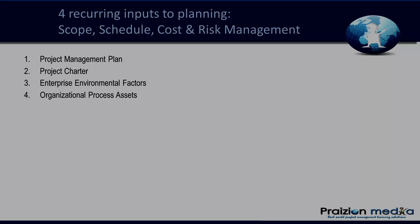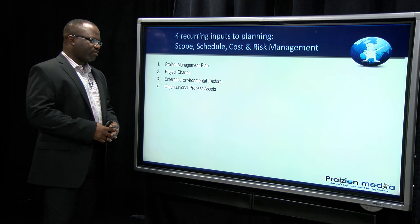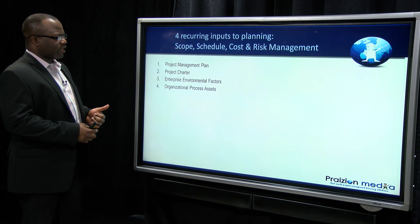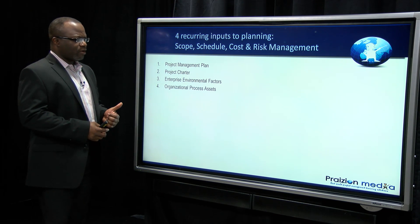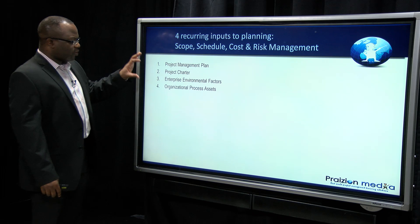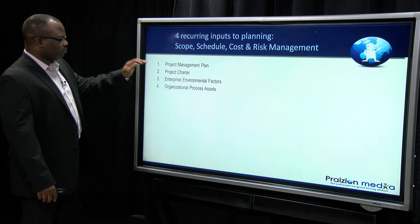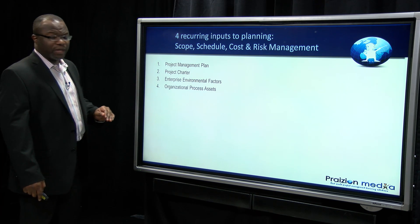Let's talk about four recurring inputs to planning processes, specifically those planning processes in scope, schedule, cost, and risk. In plan scope management, plan schedule management, plan cost management, and plan risk management, we've got four recurring themes — four recurring inputs: the project management plan, the project charter, EEFs, and OPAs.